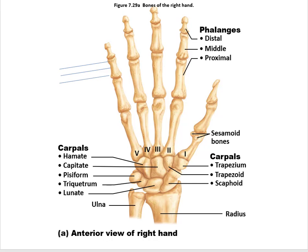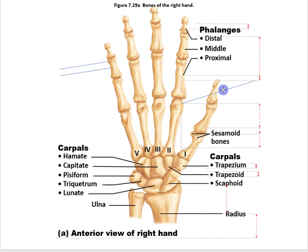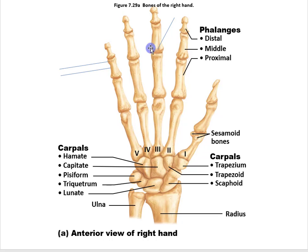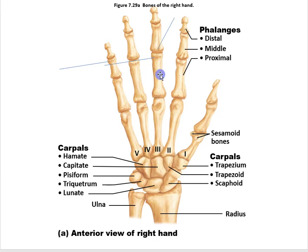Here are the types of questions I may ask. For instance: the head of metacarpal number two articulates with what? The answer is the base of the proximal phalanx. Another question: the base of the middle phalanx articulates with what? The base of the distal phalanx articulates with the head of the proximal phalanx. These are the kinds of articulation questions you should be prepared for.